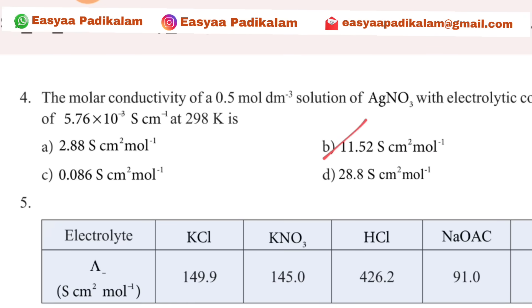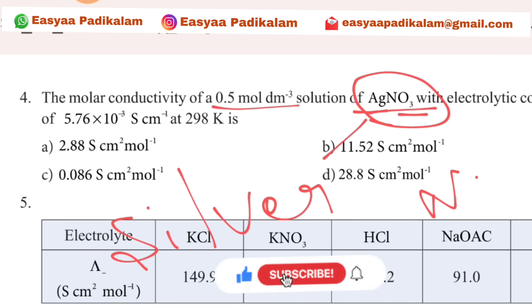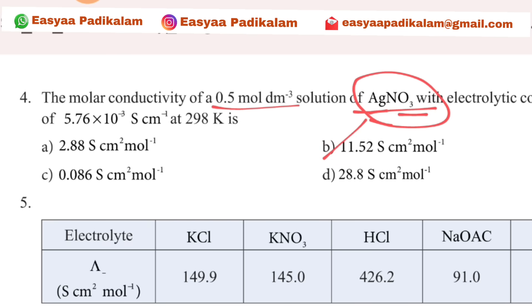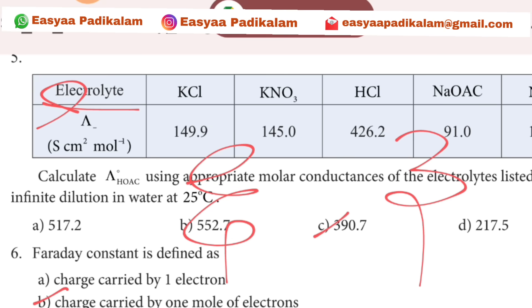Fourth question: the molar conductivity of 0.5 mol dm⁻³ AgNO₃. The answer for the electrolyte is 390.7.